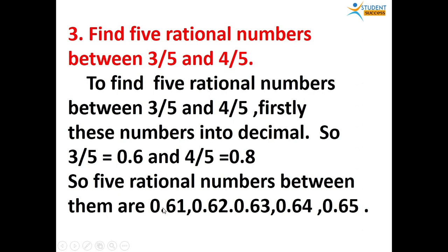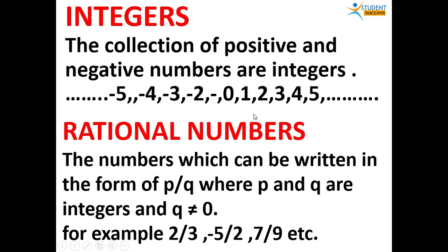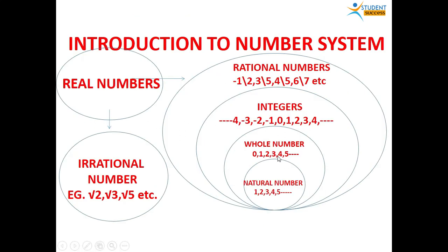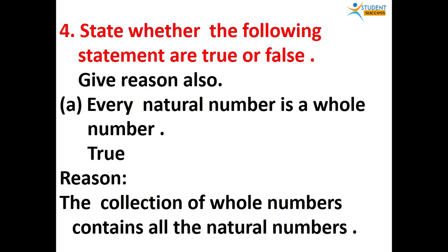The last question: state whether the given statements are true or false and give reasons. First statement: every natural number is a whole number. This is true. As we can see from the diagram, every natural number is a whole number because the whole collection of natural numbers is contained in whole numbers. The reason is that the collection of whole numbers contains all natural numbers.